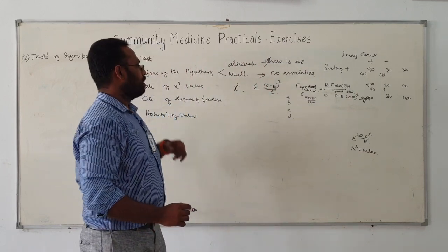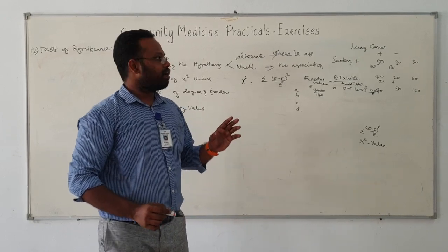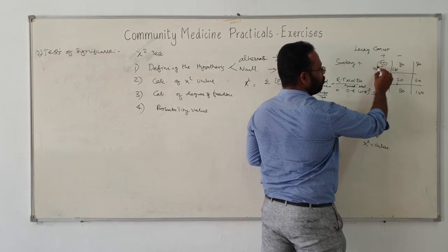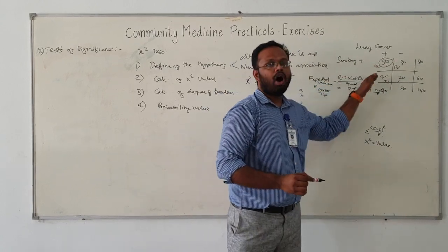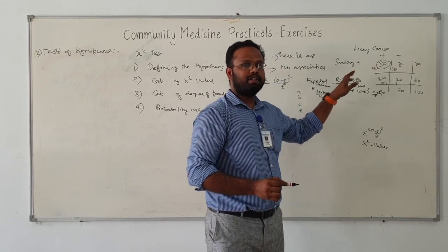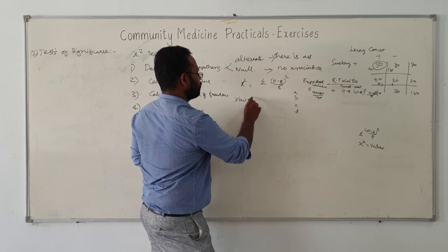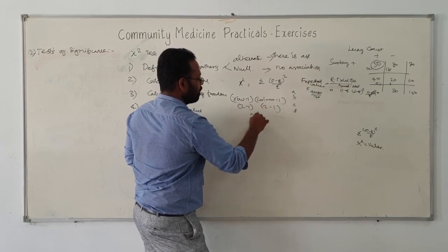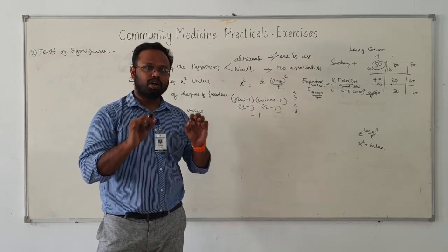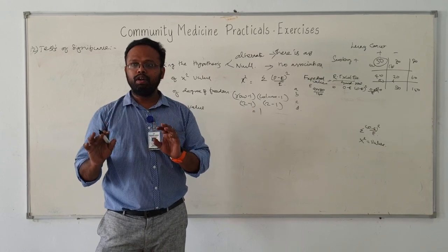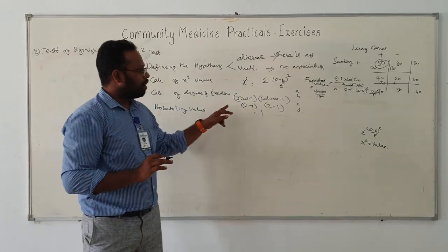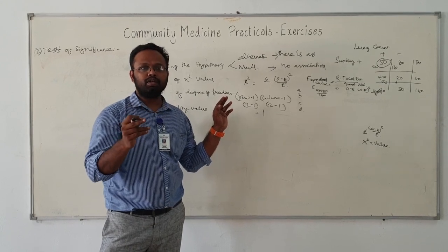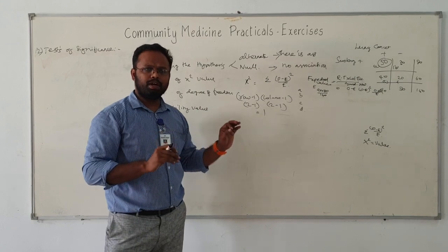The third step is degree of freedom, calculated by the formula: (rows − 1) × (columns − 1). In exams, most commonly you will get a 2×2 table, so the degree of freedom will be 1. If it is a 3×3 table it will be 4; a 3×2 table means (3−1)×(2−1) = 2, so degree of freedom will be 2. Most commonly in your exams you will get 1.